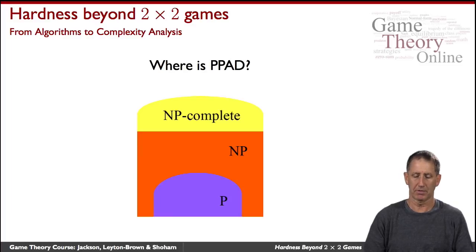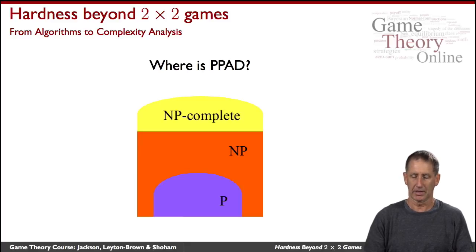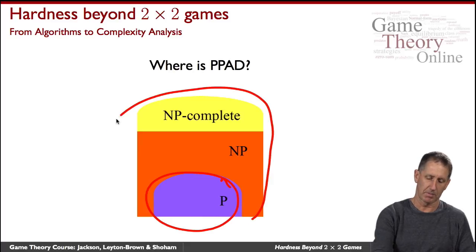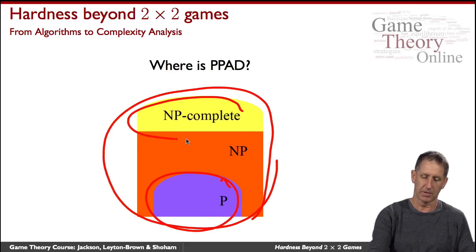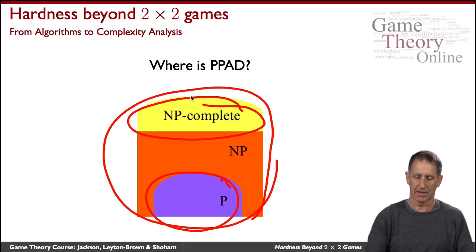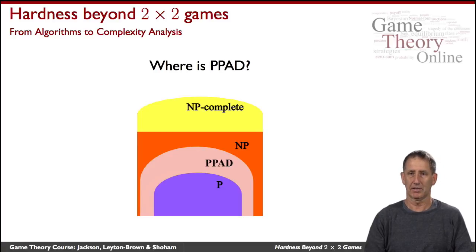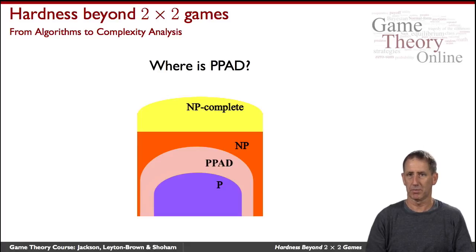This does help us position the complexity of finding a sample Nash equilibrium in the complexity hierarchy. We have the class of polynomial time problems, problems that can be verified in polynomial time with the hardest among them being NP-complete. PPAD turns out to reside somewhere within this class. We don't know whether this entire class collapses and all becomes one and the same — it's widely believed that it does not, but proof doesn't exist.